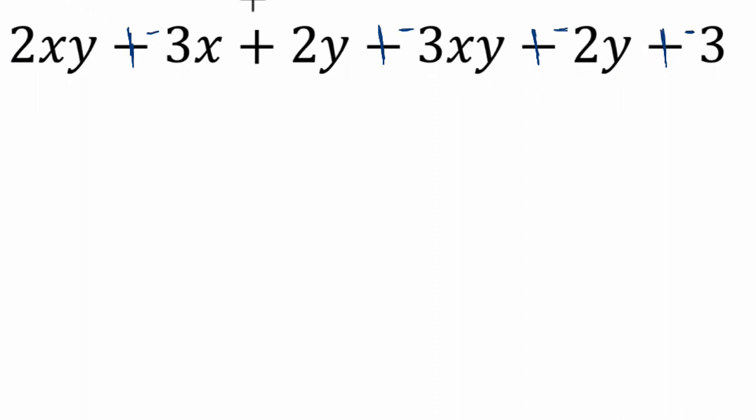nice things, like for example I have plus a positive 2y and a negative 2y. Well, you have two groups of y and then you essentially lose two groups of y, that's just 0.